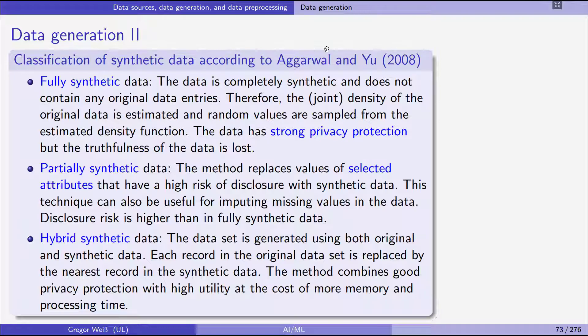Now, disclosure risk is higher than in fully synthetic data, because you might imagine that it is often possible to identify persons, not just by their name, but also if you take, for example, age, gender, income, and place of birth, date of birth, etc. So by combining different variables, you might still identify a person. So disclosure risk is higher than in the first case of fully synthetic data.